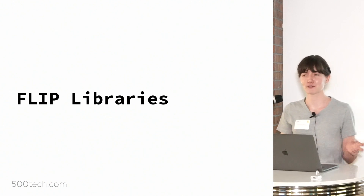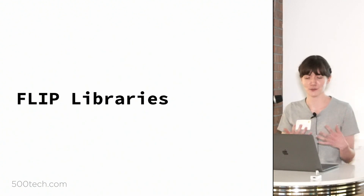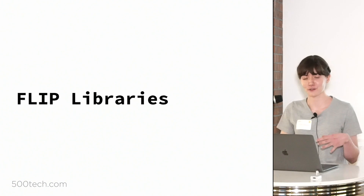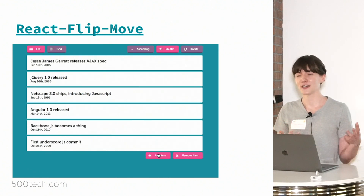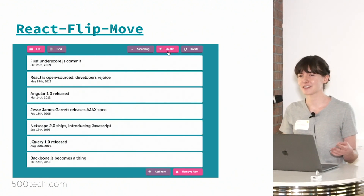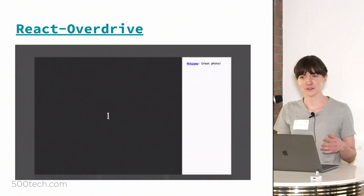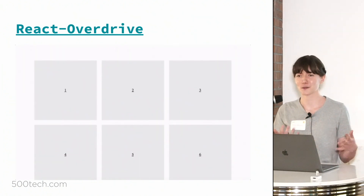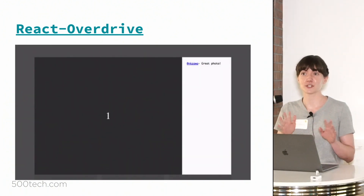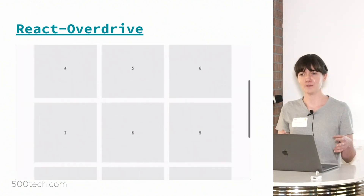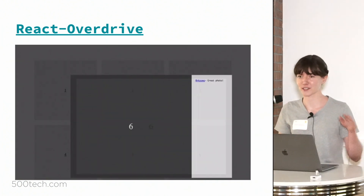As you might imagine, several FLIP libraries have cropped up so you don't have to write everything from scratch. React FlipMove is the most well-known — it's really optimized for list transitions, pretty battle-tested, and easy to use. So if you just want list transitions, that might be a good one to look at. There's also React Overdrive, which got me interested in this whole thing. React Overdrive doesn't actually use FLIP — it just clones your elements and crossfades them, which is pretty flexible and easy to implement, though not quite as smooth as FLIP.